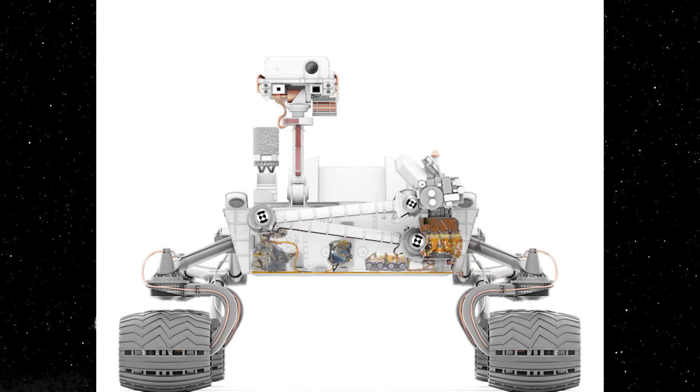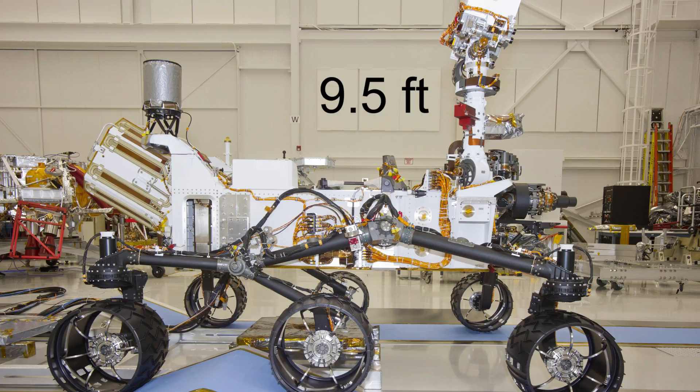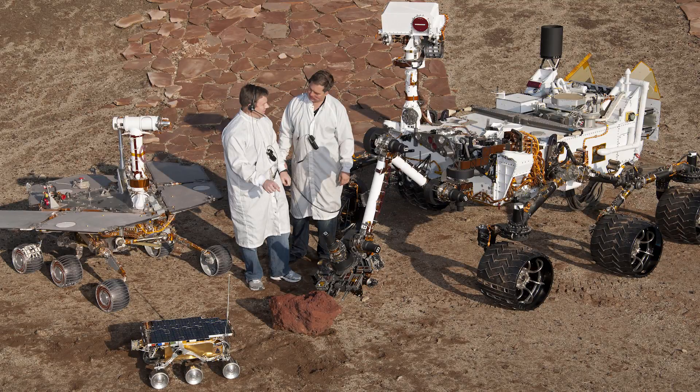The Curiosity rover was 7.2 feet high, 8.9 feet wide, and 9.5 feet long. To put that in perspective, that's about the size of a small car, maybe a sedan or a smart car, but still much bigger than Spirit and Opportunity were.